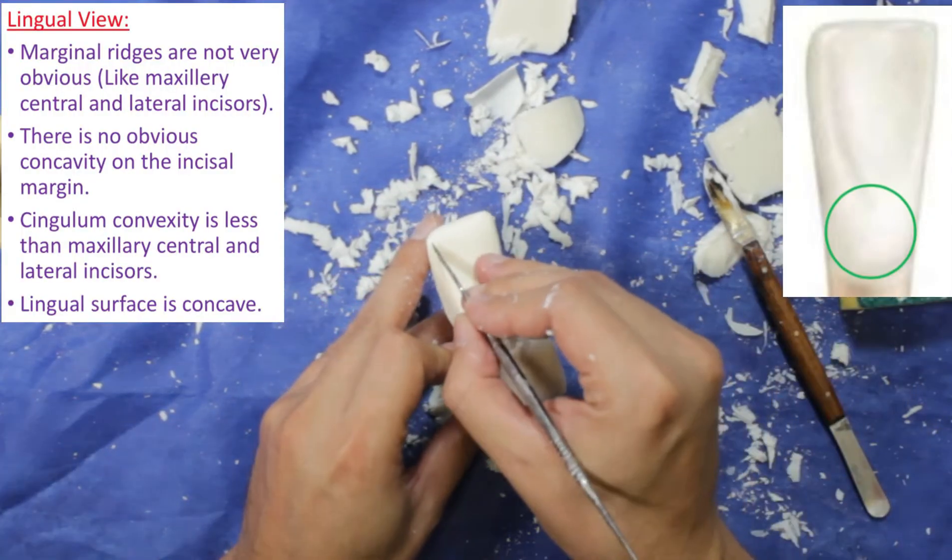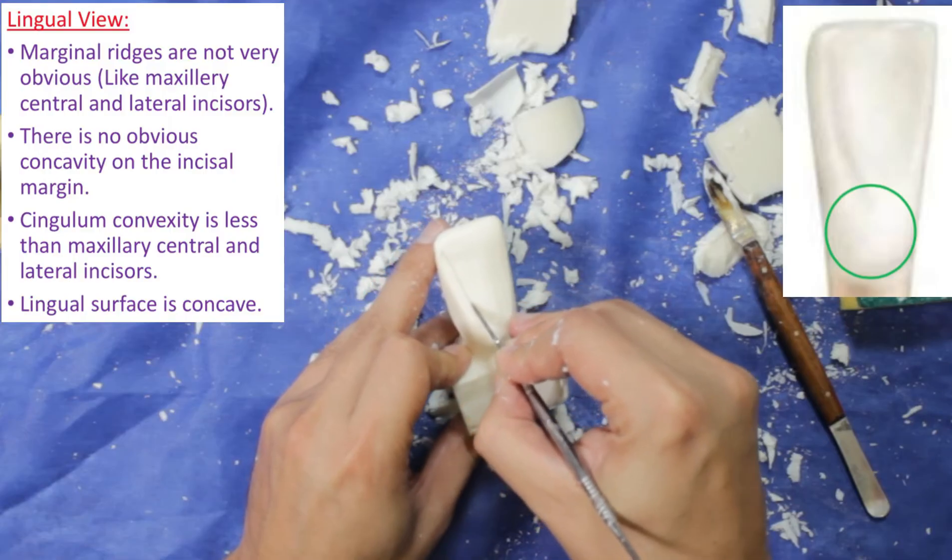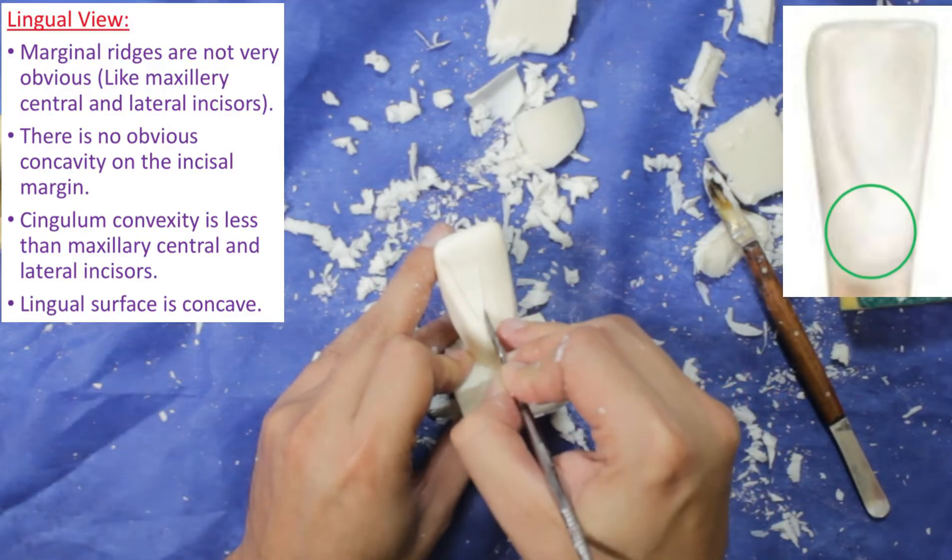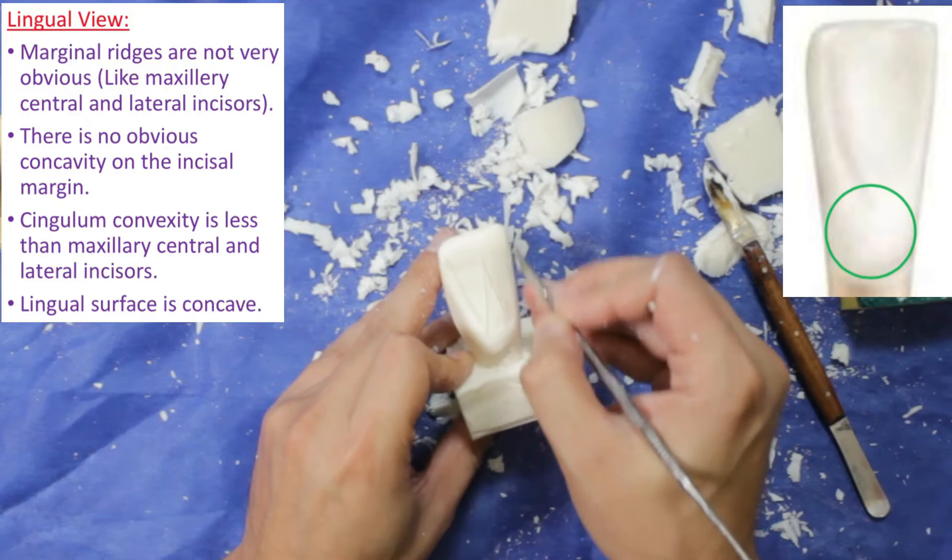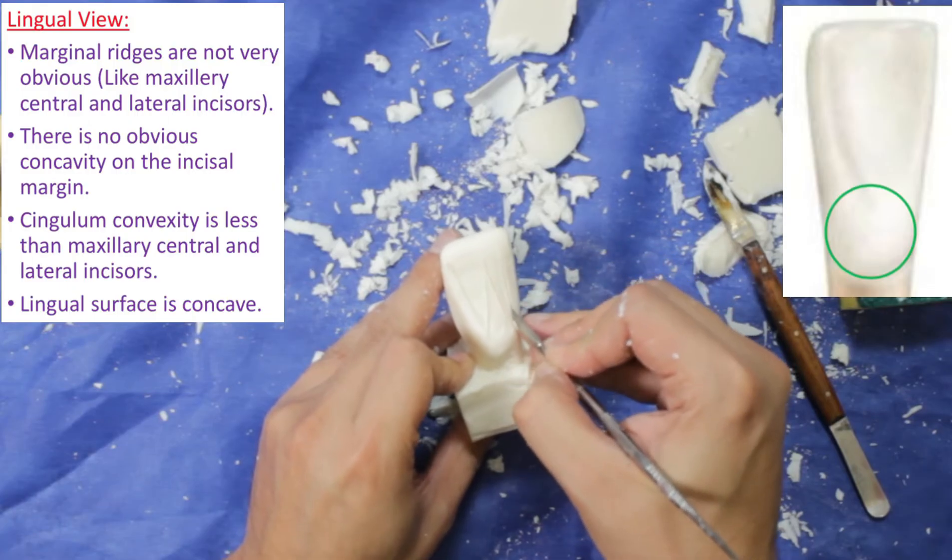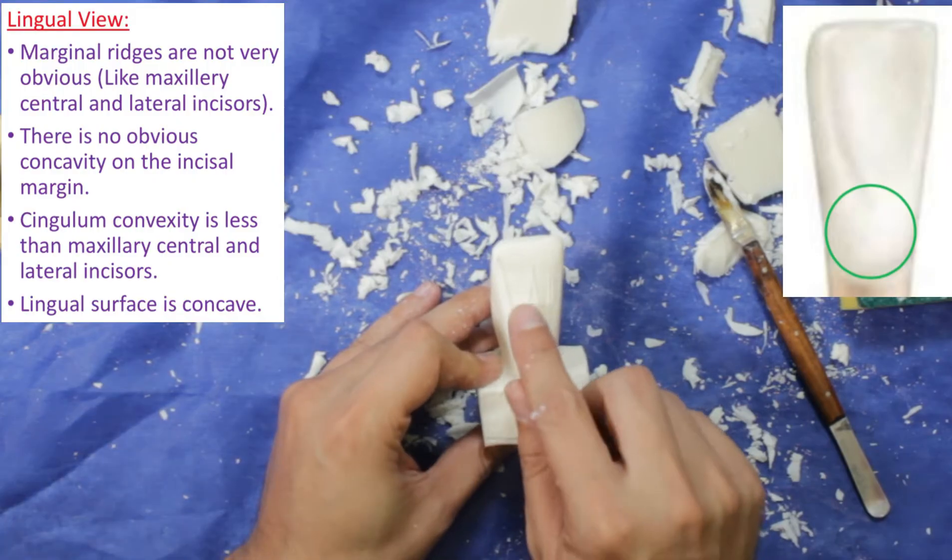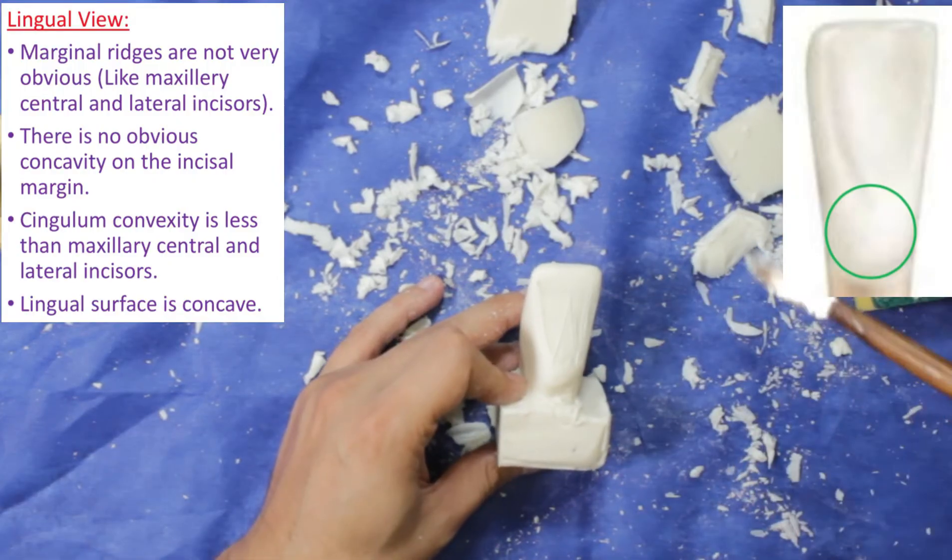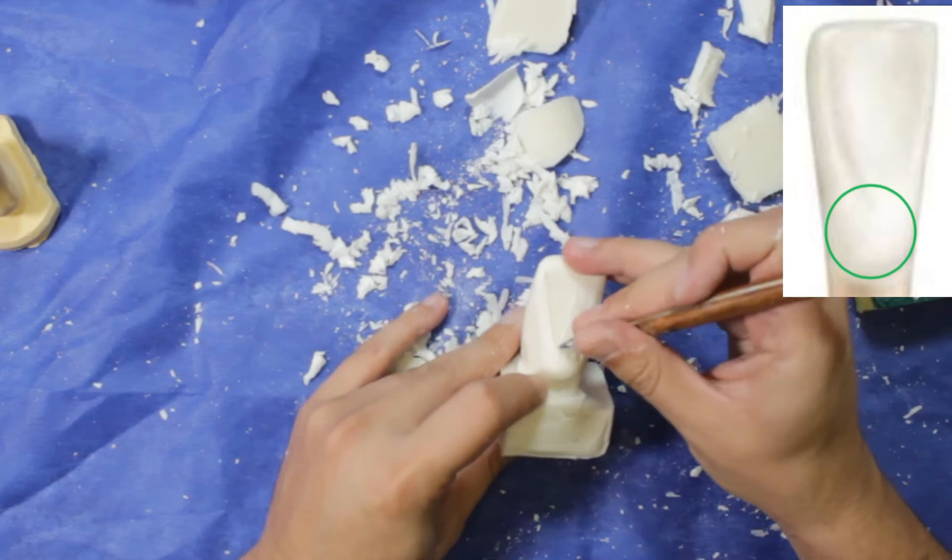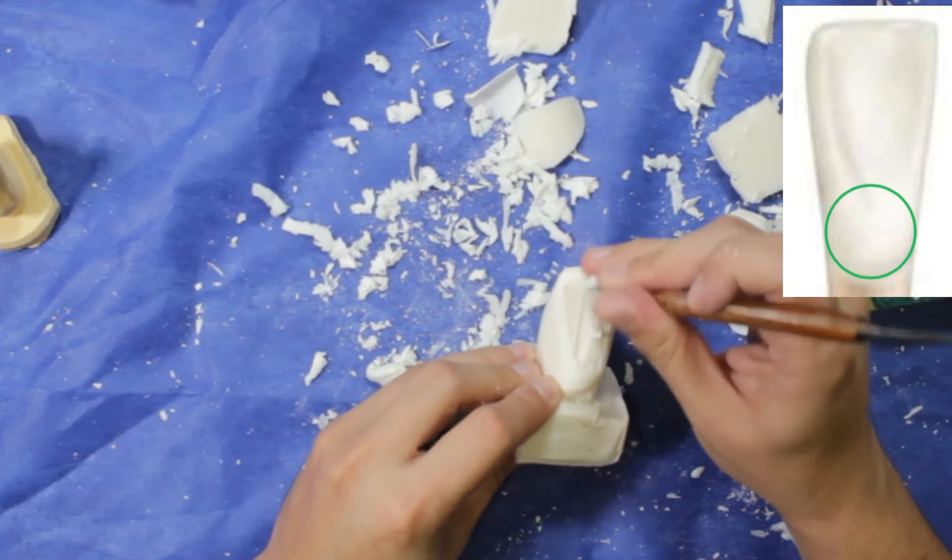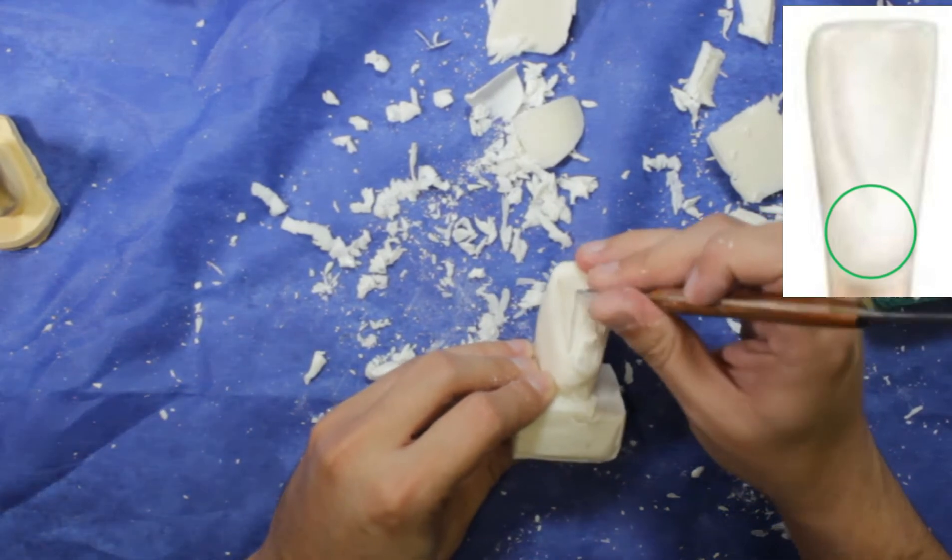In the lingual, marginal ridges are not very obvious like maxillary central and lateral incisors. There is no obvious concavity on the incisal margin. Cingulum convexity is less than maxillary central and lateral incisors. Also, lingual surface is concave. And again, we will mark like an M ladder. Now I will carve the marginal ridges.